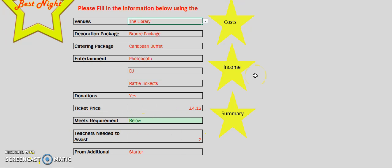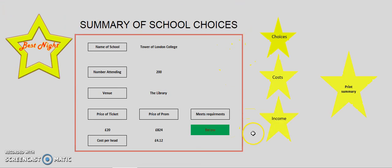Finally, I have selected the summary tab. This takes you to the summary sheet. From there, you can review the key information about the prom. You are also given the option to print the summary sheet by pressing the print summary button. Thank you for listening to Best Night Prom Organiser's demo.